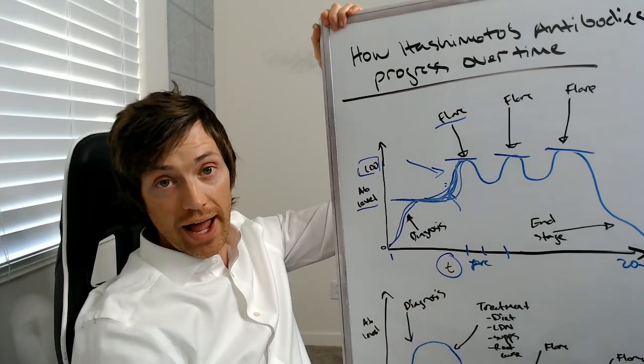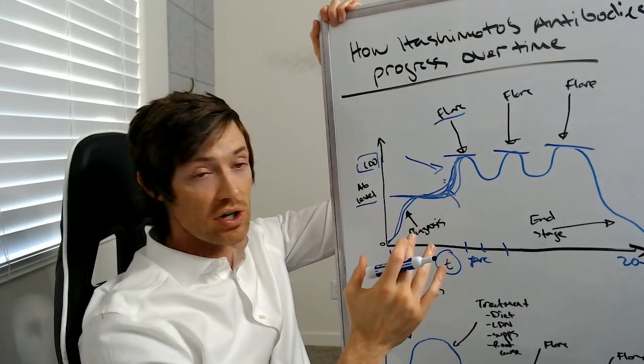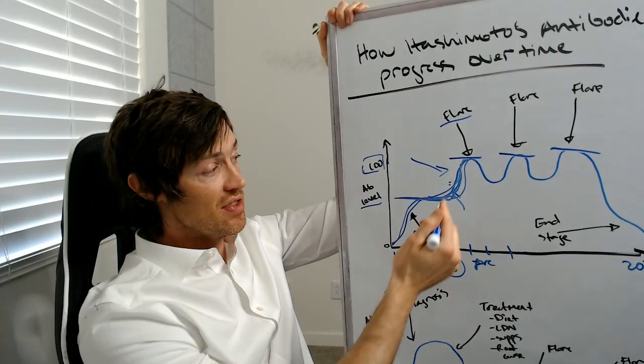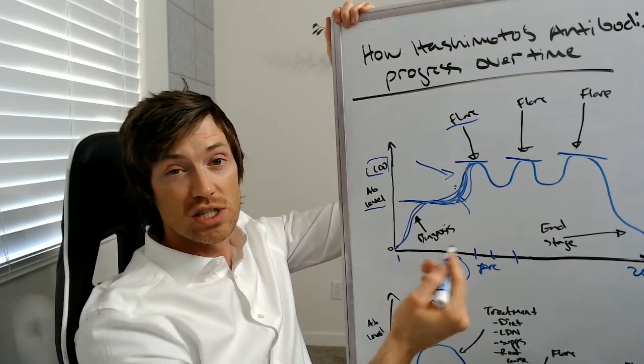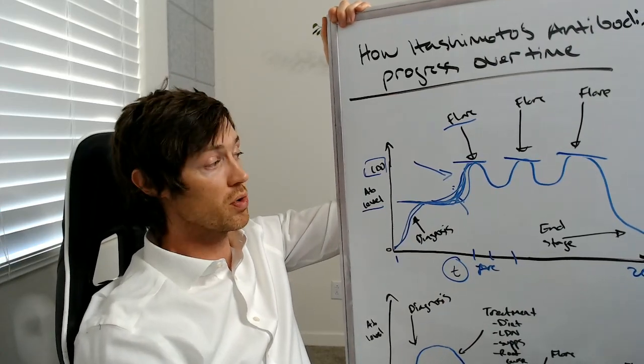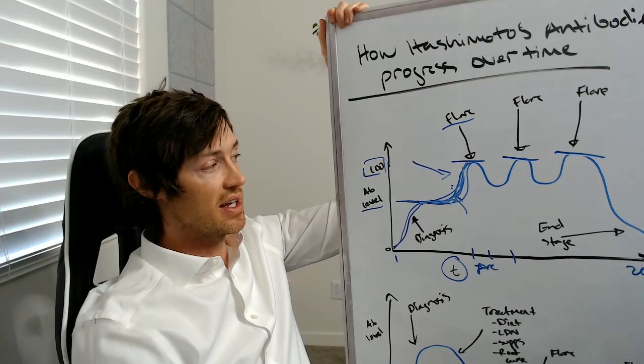So you do not want these flares to occur. Now invariably they will happen. Things like stress that are completely out of your control may trigger you to have a flare in your antibody levels. This could be, for instance, the death of a loved one. This could be a car accident that you got in.